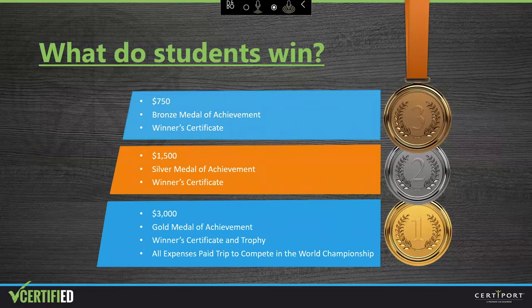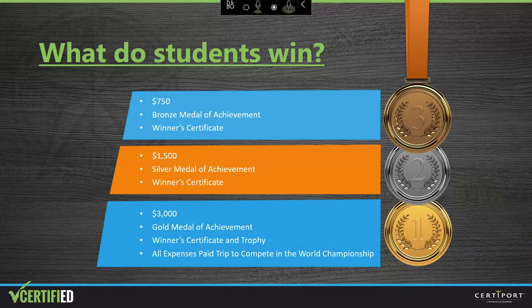The students competing at the Microsoft Office Specialist U.S. National Championship have the opportunity to win some big prizes. The third place U.S. National Champion in each exam track wins $750, a bronze medal of achievement, and a winner's certificate. The first place winner in each exam track wins $3,000, a gold medal of achievement, a winner's certificate, a trophy, and an all-expenses-paid trip to compete in the World Championship. The six first place winners get to move forward to the Microsoft Office Specialist World Championship and have the opportunity to win even more bragging rights and bigger prizes.